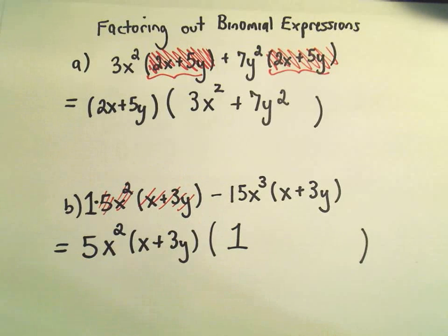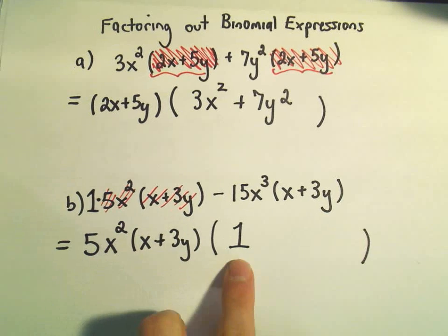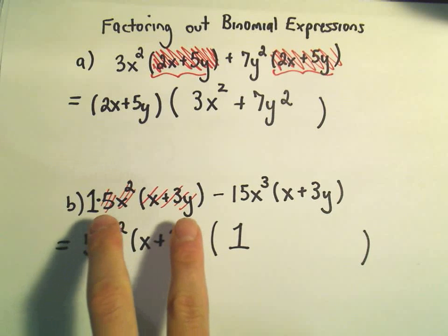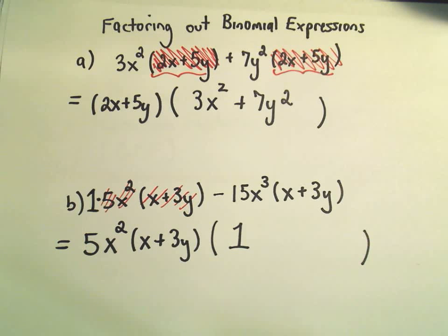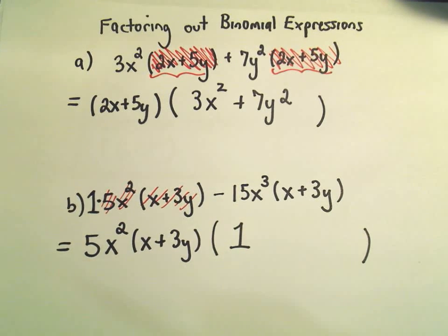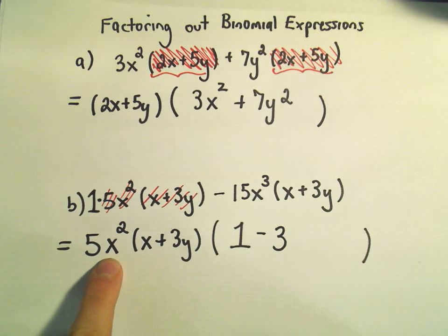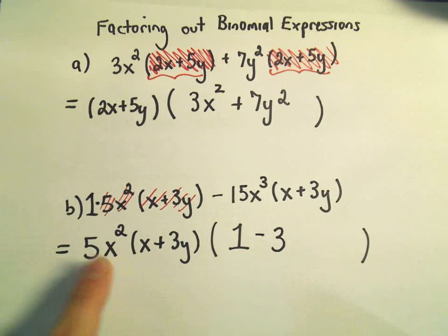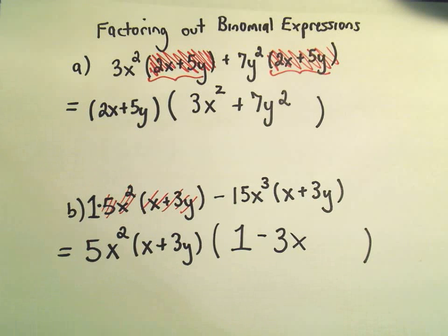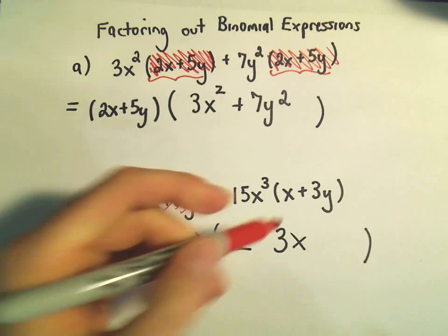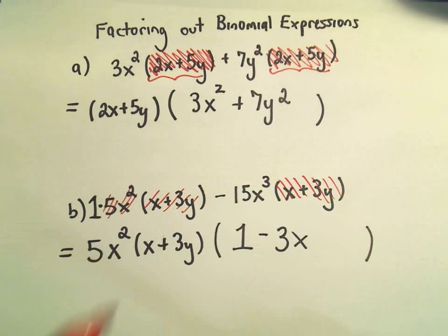So that's what I'm going to need as my first term in the parentheses. And if you multiply all that stuff by 1, it'll just give you exactly back the first term in our original expression. So then I think 5 times what is negative 15? We'll need a negative 3. x squared times what is x cubed? I believe we would just need an x. And we've already factored out the x plus 3y, so we've already accounted for that by factoring it out.